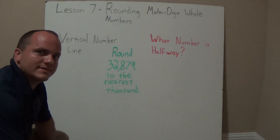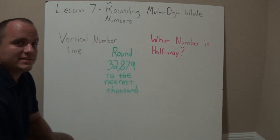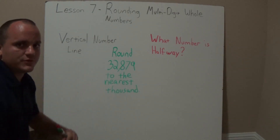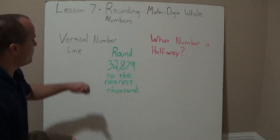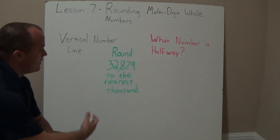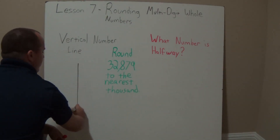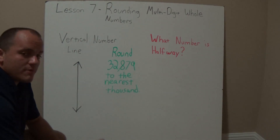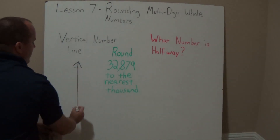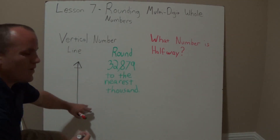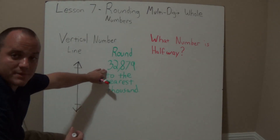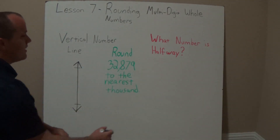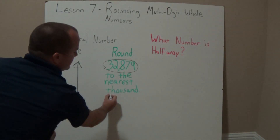Stay tuned and we're going to take a look at a couple of homework problems. Welcome to homework question 1c — we're still rounding multi-digit whole numbers. Question 1c says: round 32,879 to the nearest thousand. Just like I explained, we're going to use a vertical number line to solve this problem. I'll draw a quick vertical line — remember, vertical means up and down — with a line at the top and a line at the bottom.